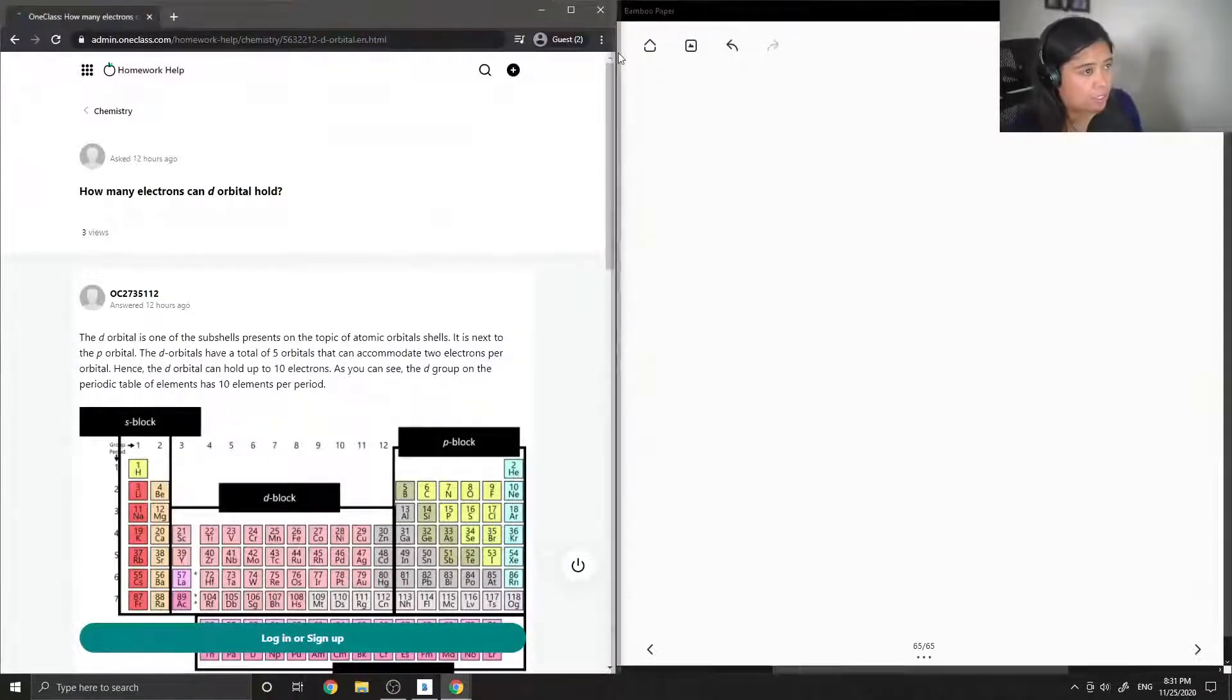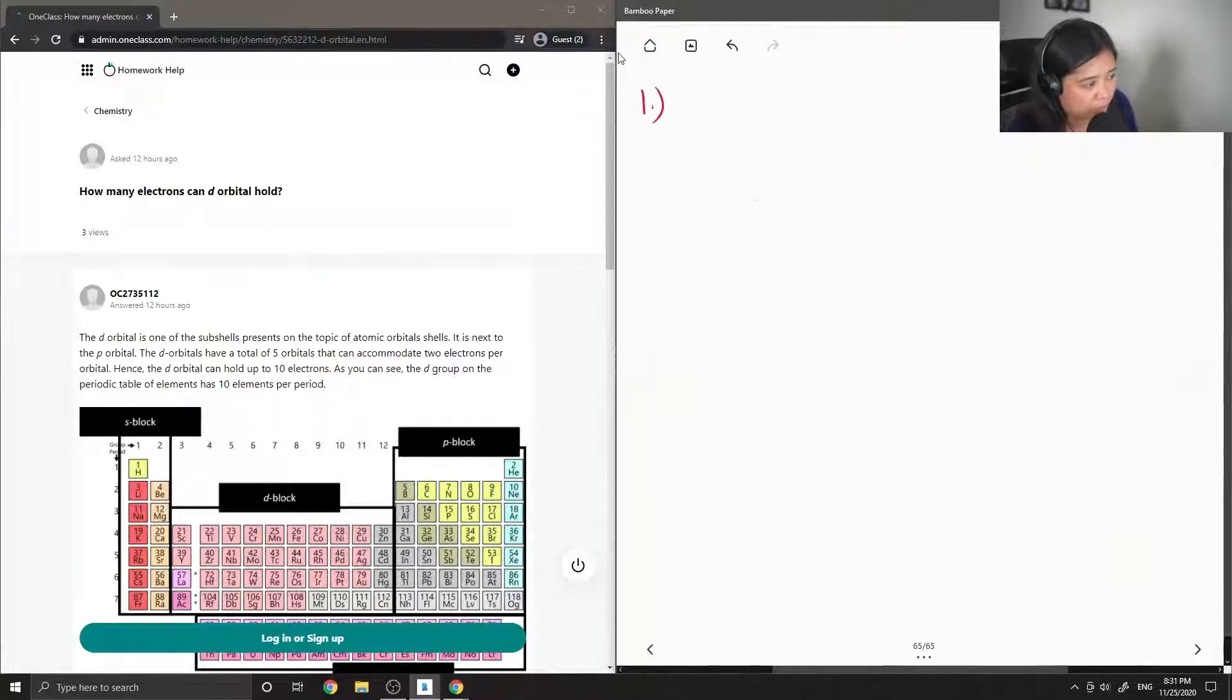Okay, so the first question asks: how many electrons can the d orbital hold? First let's recall the different L values for all of the different s-block, p-block and d-block orbitals.